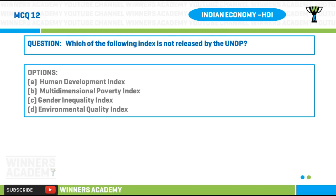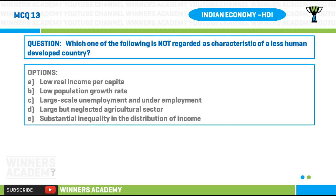Question number twelve: which of the following index is not released by the UNDP? Option A) Human Development Index, option B) Multi-dimensional Poverty Index, option C) Gender Inequality Index, option D) Environmental Quality Index.